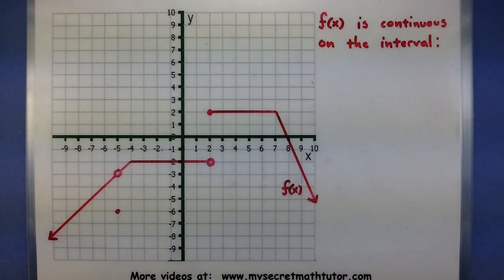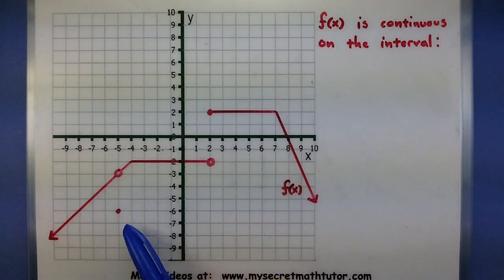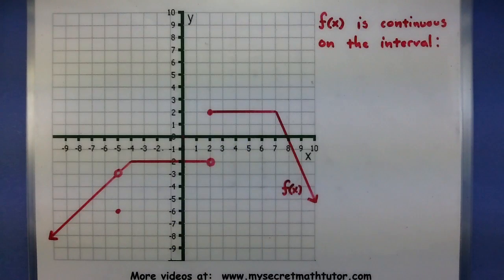So here I have a graph of a function that is definitely not continuous. It has holes and it's got this giant gap right here. But if I don't want to look at the entire graph, maybe just portions of it, then it might be continuous on small intervals.